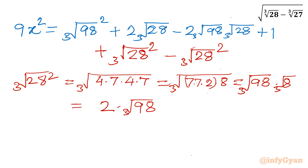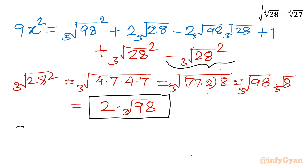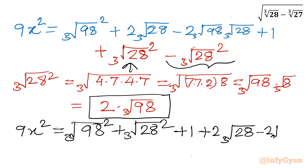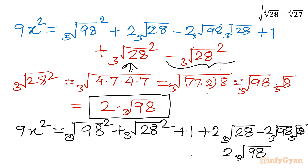Minus plus cube root of 28 whole square. Here I will write 2 times cube root of 98. So 9x squared equals cube root of 98 whole square plus cube root of 28 whole square, plus 1, plus 2 times cube root of 28, minus 2 times cube root of 98 times cube root of 28, and then minus 2 times cube root of 98, with a negative sign.